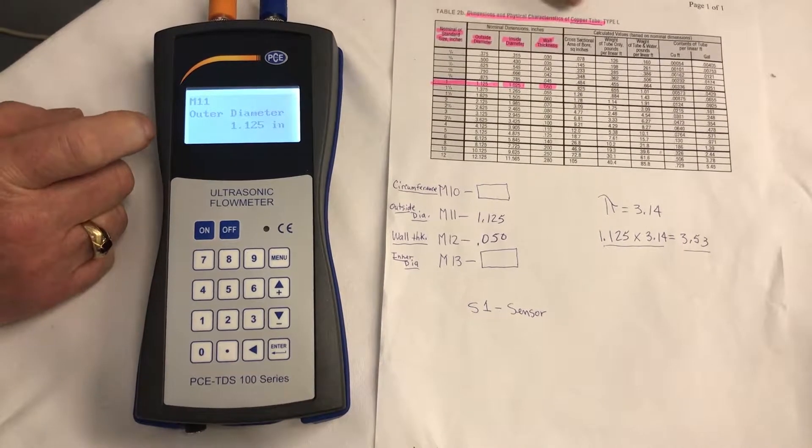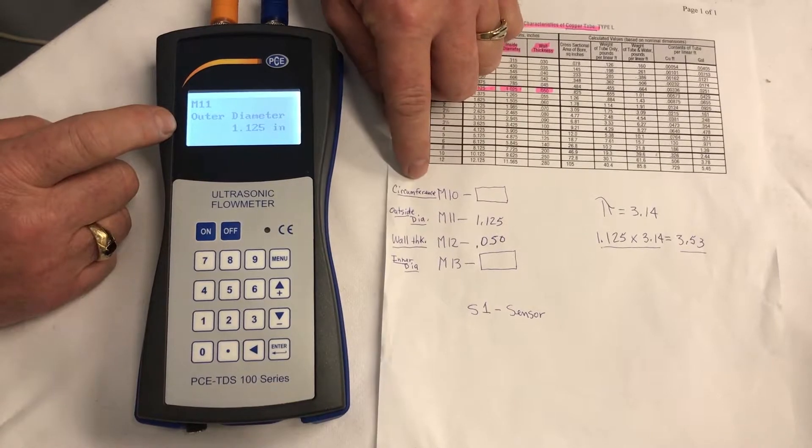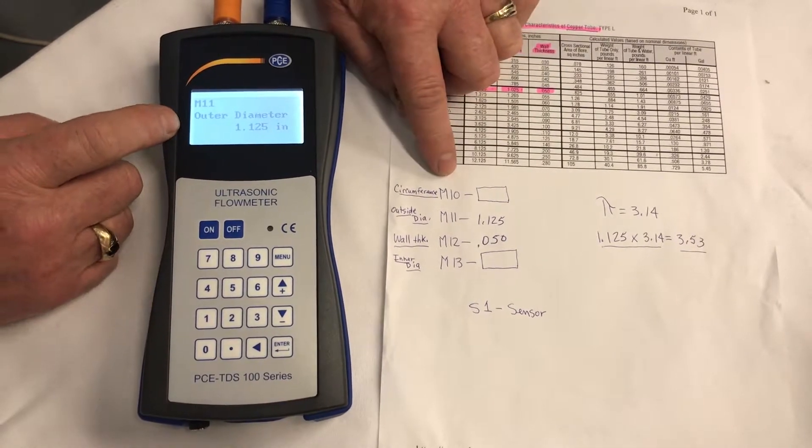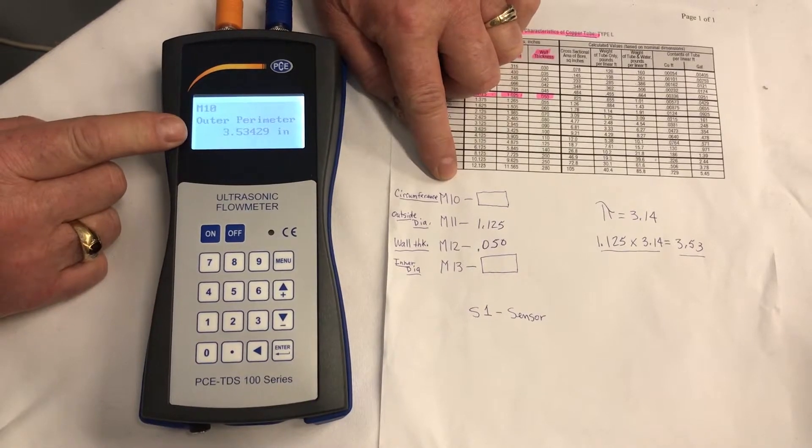If we put the outside diameter in, it figures the circumference for us, which is M10. So we go back to M10, and there it is, 3.53.